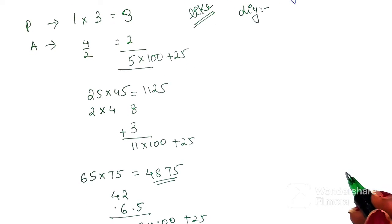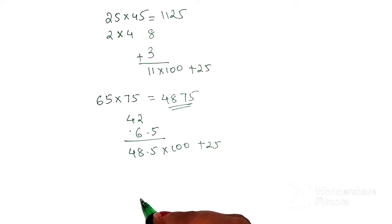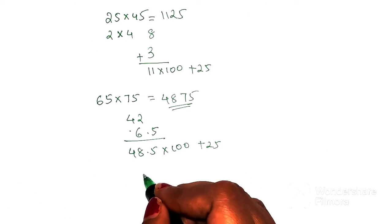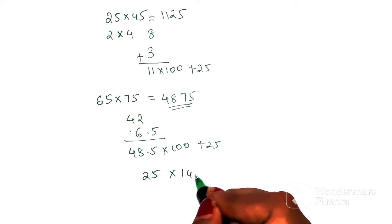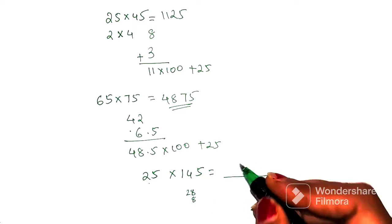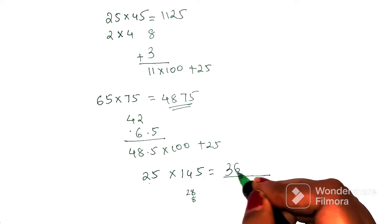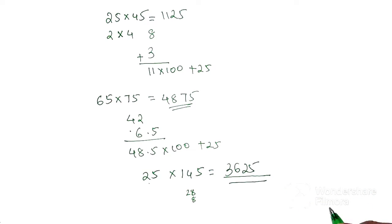You might be wondering what about bigger numbers, like if there is 25 into 145, then what happens? Let's do this orally. We have 2 into 14, that gets you 28. Then average gets you 8. 28 plus 8 gets you 36, times 100 is 3600 plus 25, gets you 3625. So you saw how easily you could do this, you can literally do this in your mind.